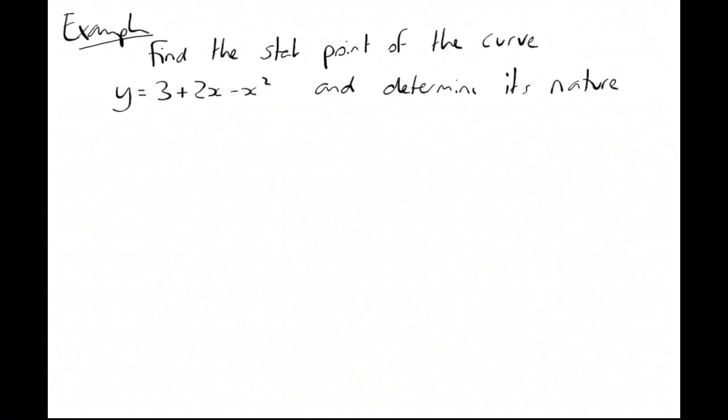We'll have a look at a quick example. Find the stationary point of the curve y equals 3 plus 2x minus x squared and determine its nature. If you think about that, that's a negative quadratic. Negative quadratic is a sad quadratic, so it's going to have to have a maximum. But we'll see how the maths works on this. Dy by dx is 2 minus 2x. That's 0 at the stationary point, so x is 1.